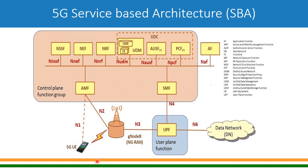On the user-plane side, all data traffic flows from UE to G Node B to User Plane Function and then to the data network. Looking at the interfaces: UE talks to AMF on N1 interface through G Node B; G Node B talks to AMF on N2 interface; G Node B to UPF is N3; UPF to data network is N6; UPF to SMF is N4. On the control plane, there is no point-to-point interface — it is API-based.